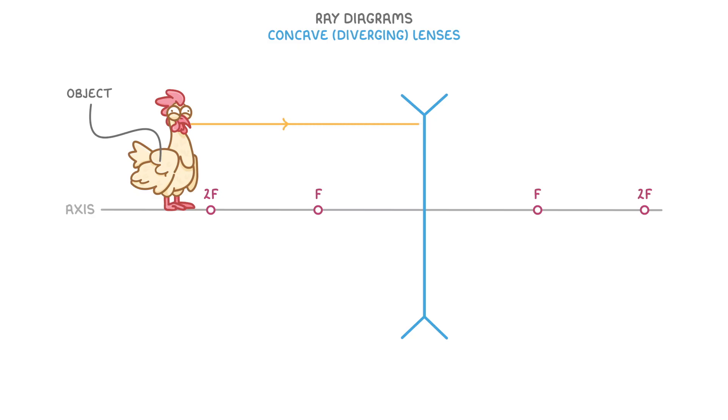So, one running parallel to the axis, and another one going towards the centre of the lens. Because this second ray went through the centre, it won't be refracted at all, and it will just continue on straight.